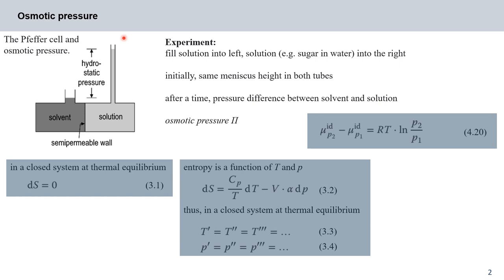In the previous lecture we looked at equilibria between a solution and the pure solvent where the pure solvent is in a different state — for example, a vapor or a solid, and the solution in a different state such as a liquid. Now we want to consider the case where the pure solvent is also in the liquid phase. The figure here schematically shows a so-called Pfeffer cell. The cell is closed on all sides and has two riser tubes, and it is separated down the middle by a semi-permeable wall.